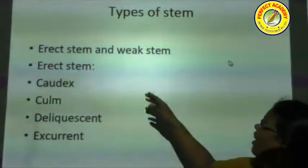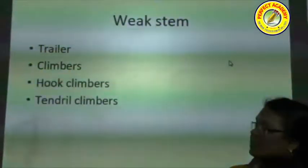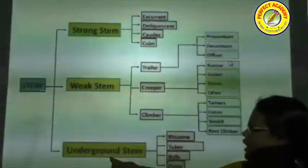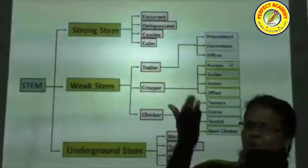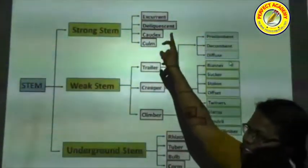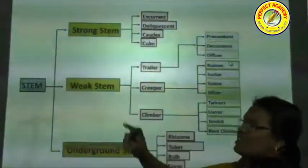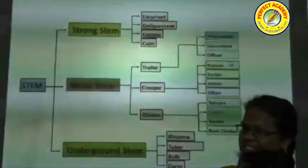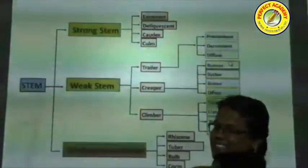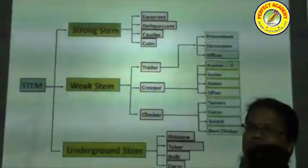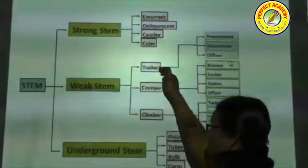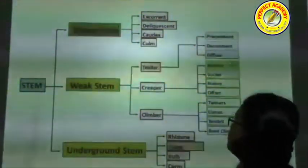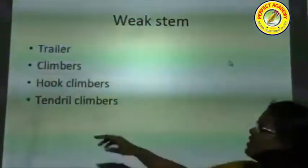Depending upon texture, stems are broadly classified into strong stem, weak stem, and underground stem. The strong stem is further divided into excurrent, deliquescent, caudex, and culm. Weak stems are described as climbers and are further divided into trailer, creeper, and climber. The underground stem is further classified into rhizome, tuber, bulb, and corm.